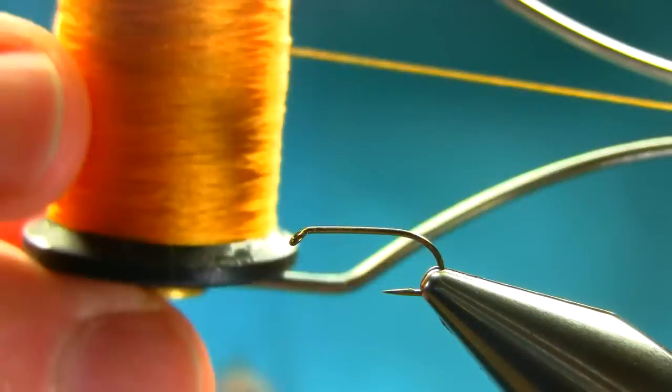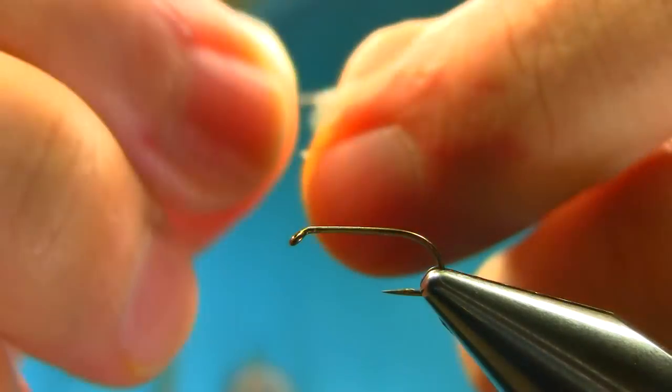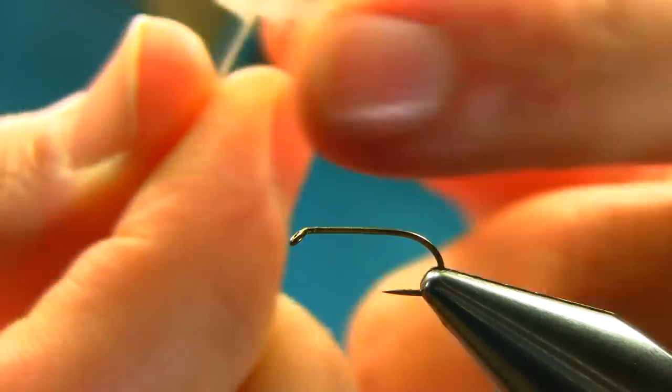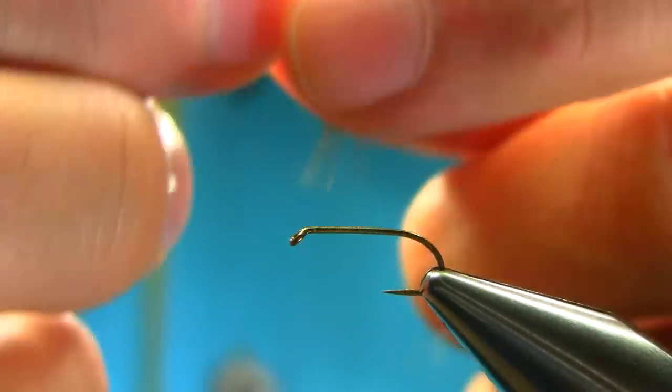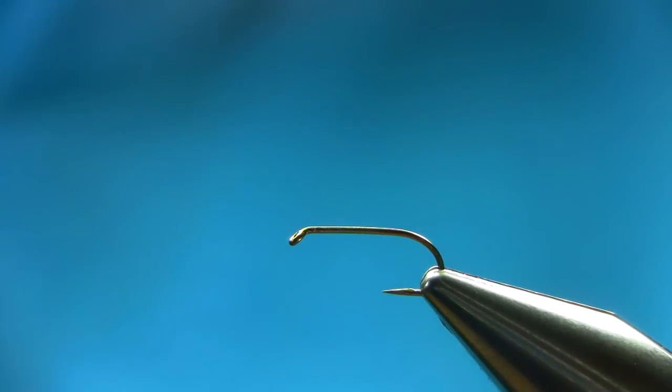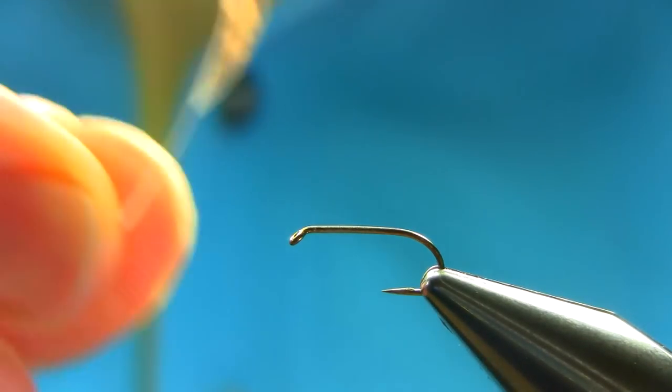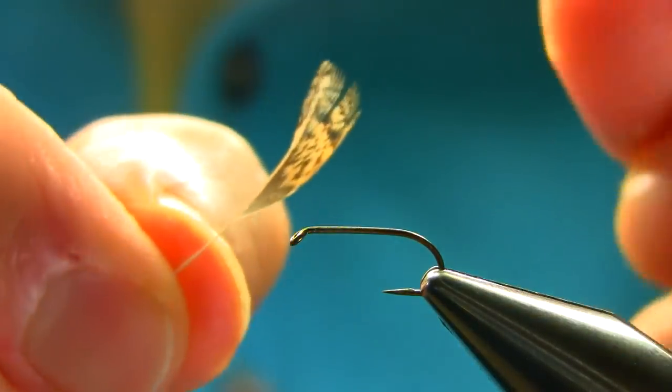This is an orange gossamer silk, and for the hackle I'm going to be using brown partridge. Just take all the fluff from the side, from the bottom, and from this side as well, as you can see.